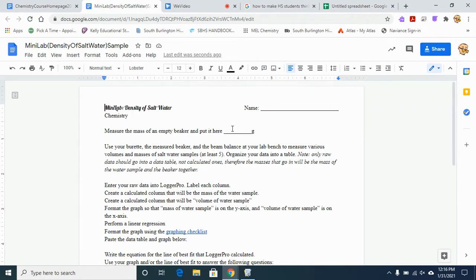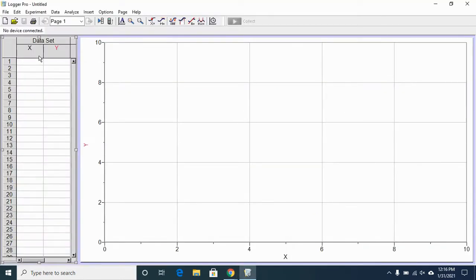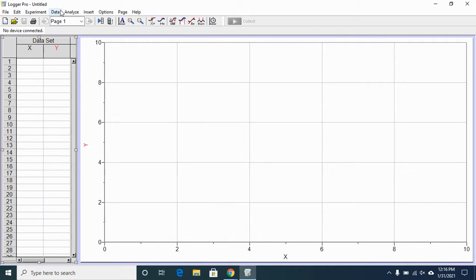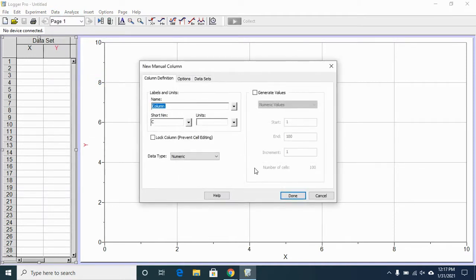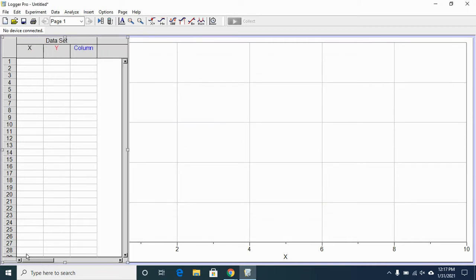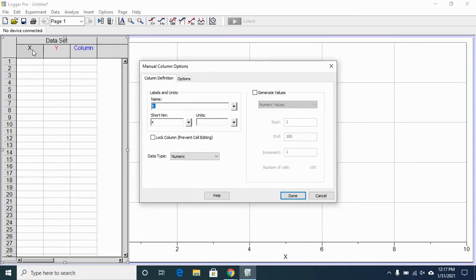Measure the mass of an empty beaker and put it here. Mine was 44.631 grams. Next, I'm going to input my data into Logger Pro. I performed five trials and there were three pieces of data recorded for each trial. So in addition to the X and Y provided, I'm going to need to add another manual column. You do that by going to data at the top and new manual column. I'll name it later. A manual column means that you're going to be typing in numerical data and not a calculated column, which we'll look at later where it's going to calculate values for you.